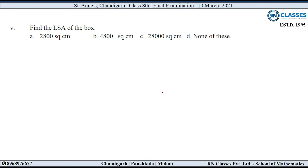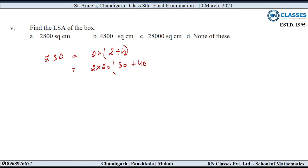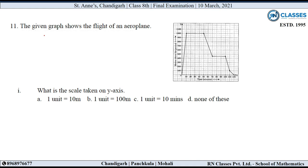Next sub-question: Find the lateral surface area of the box. Lateral surface area of cuboid = 2H into (L plus B) = 2 into 20 into (30 plus 40) = 40 into 70 = 2800 cm². So option A is correct.